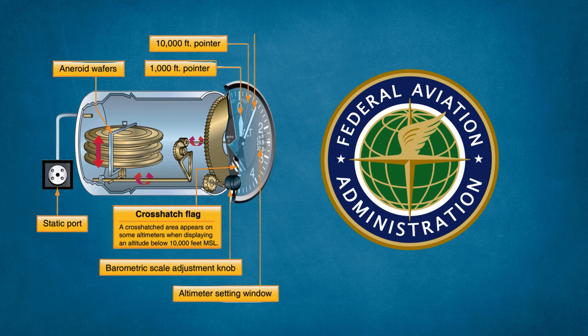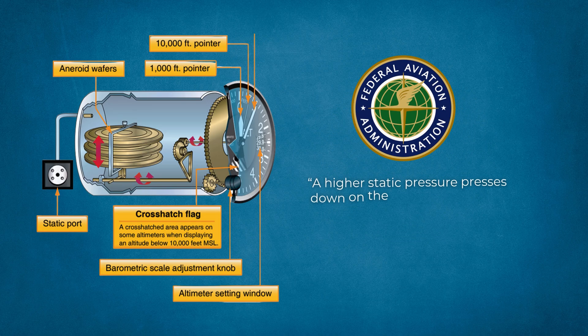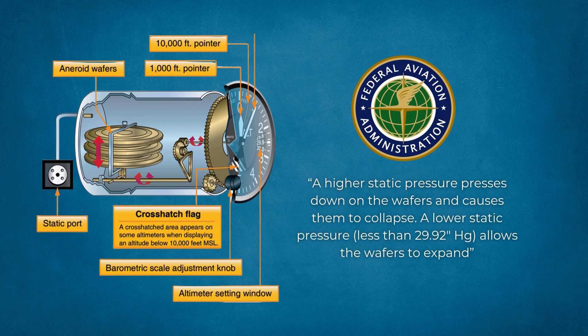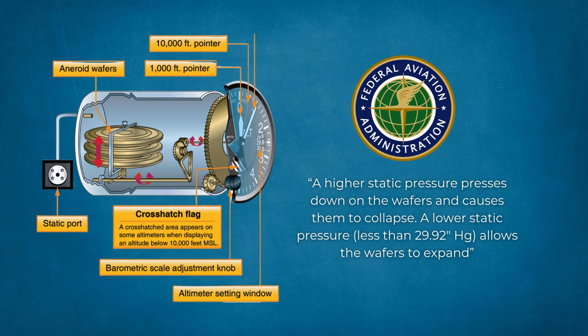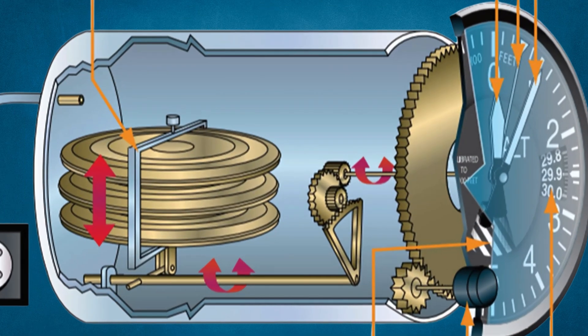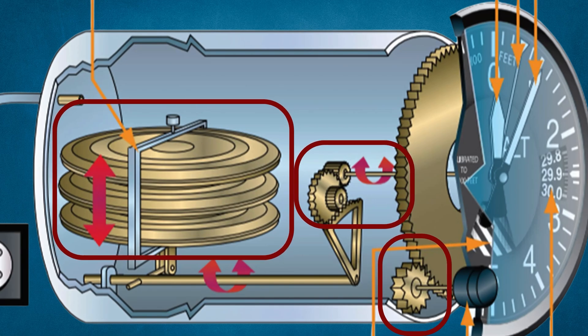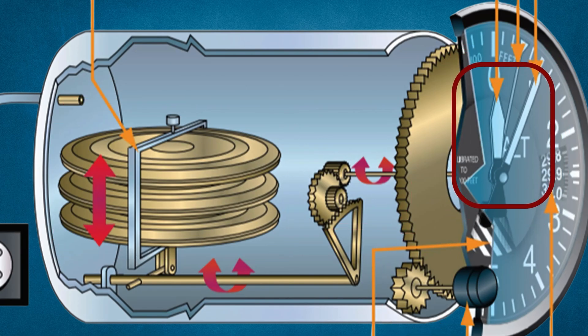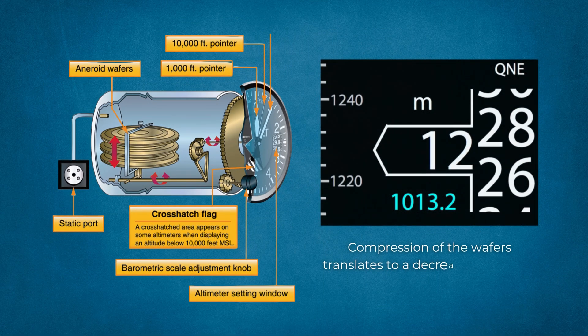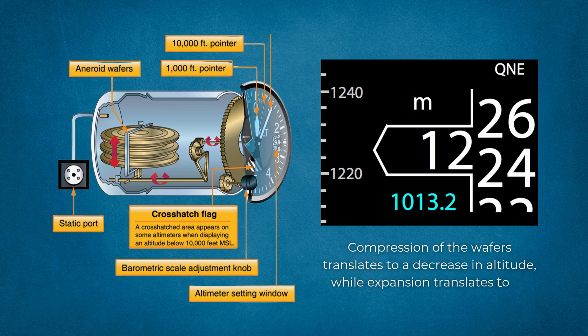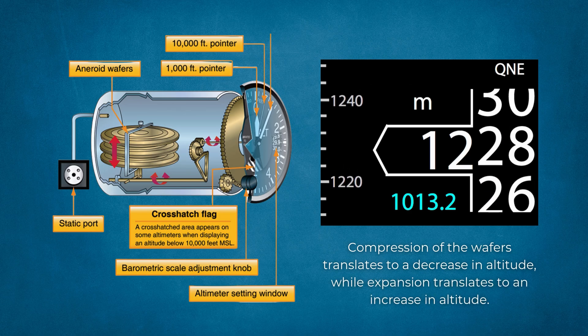The FAA explains that a higher static pressure presses down on the wafers and causes them to collapse. A lower static pressure, less than 29.92 inches of mercury, allows the wafers to expand. Mechanical linkages connect the movement of these wafers to needles on the interior face of the altimeter. Compression of the wafers translates to a decrease in altitude, while expansion translates to an increase in altitude.